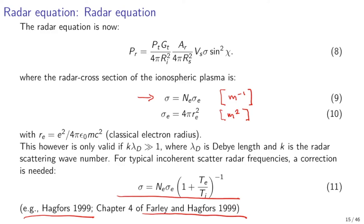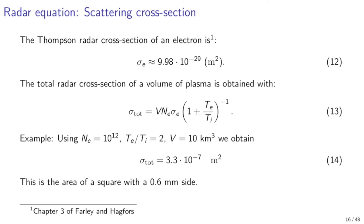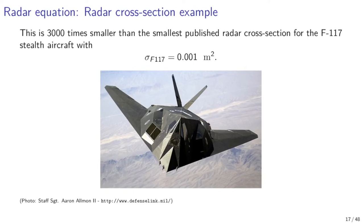The incoherent scatter cross-section for ionospheric plasma is very small. Adding up all scattering contributions from all electrons within the plasma volume gives a total scattering cross-section given in equation 13. For example, assuming an electron density of 10¹² electrons per cubic meter, a ratio of electron to ion temperature of 2, and a volume of 10 cubic kilometers, we obtain a radar cross-section of only 3.3 × 10⁻⁷ square meters — roughly 0.6 millimeter side. Radar scatter from ionospheric plasma is therefore very weak.